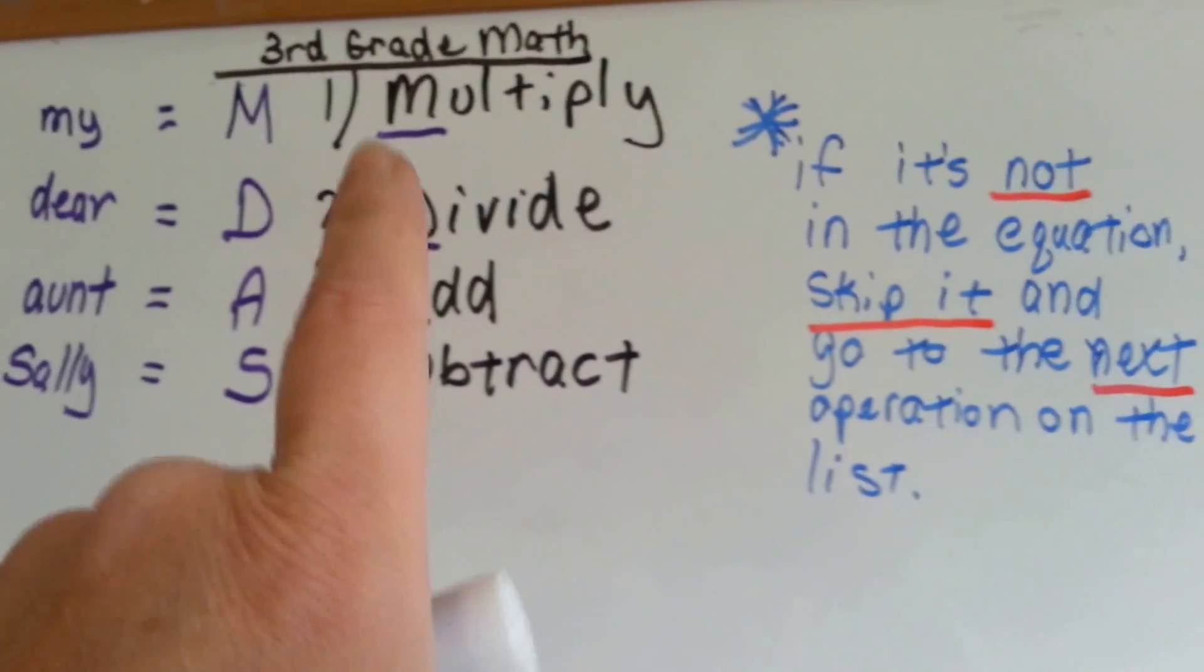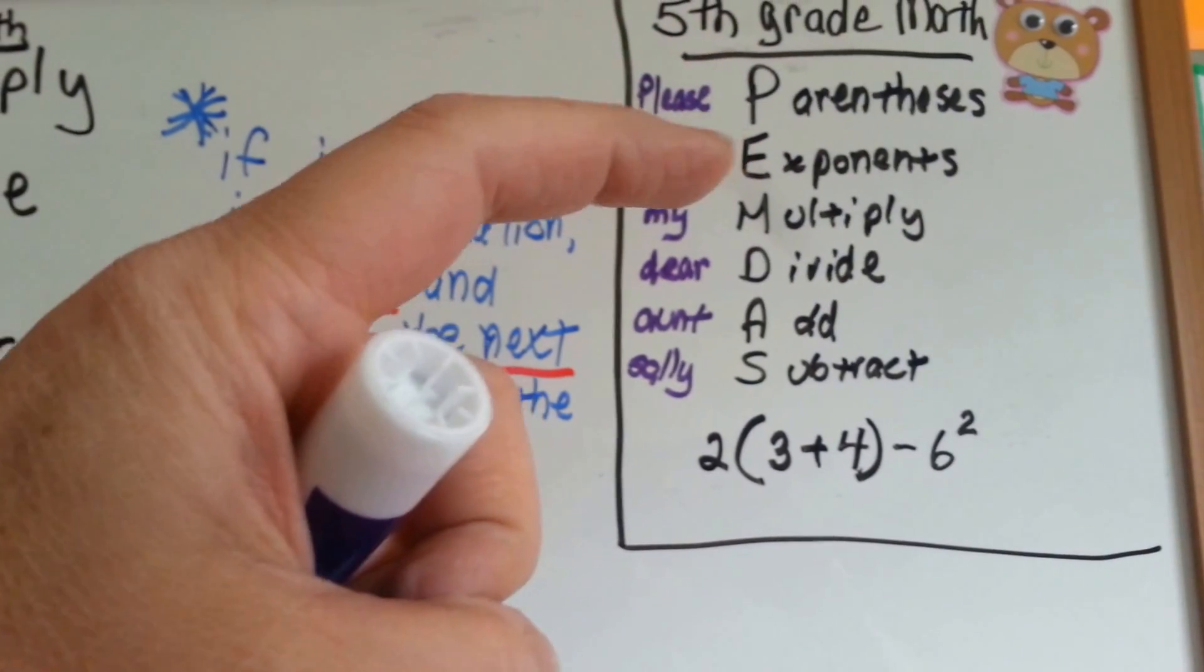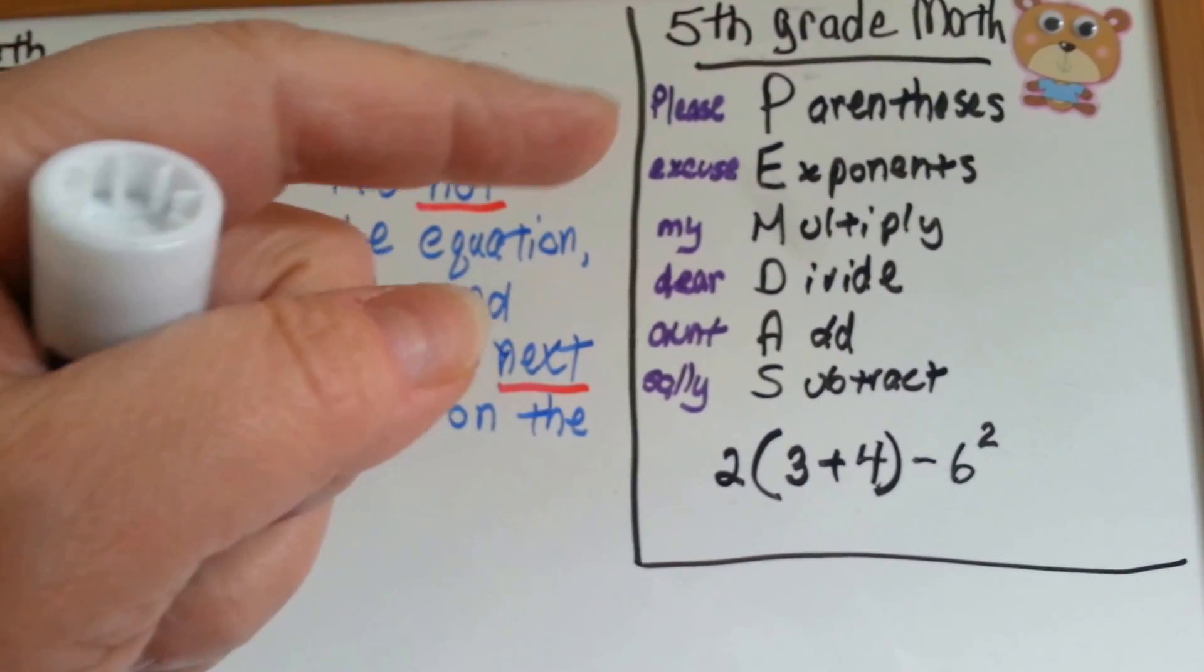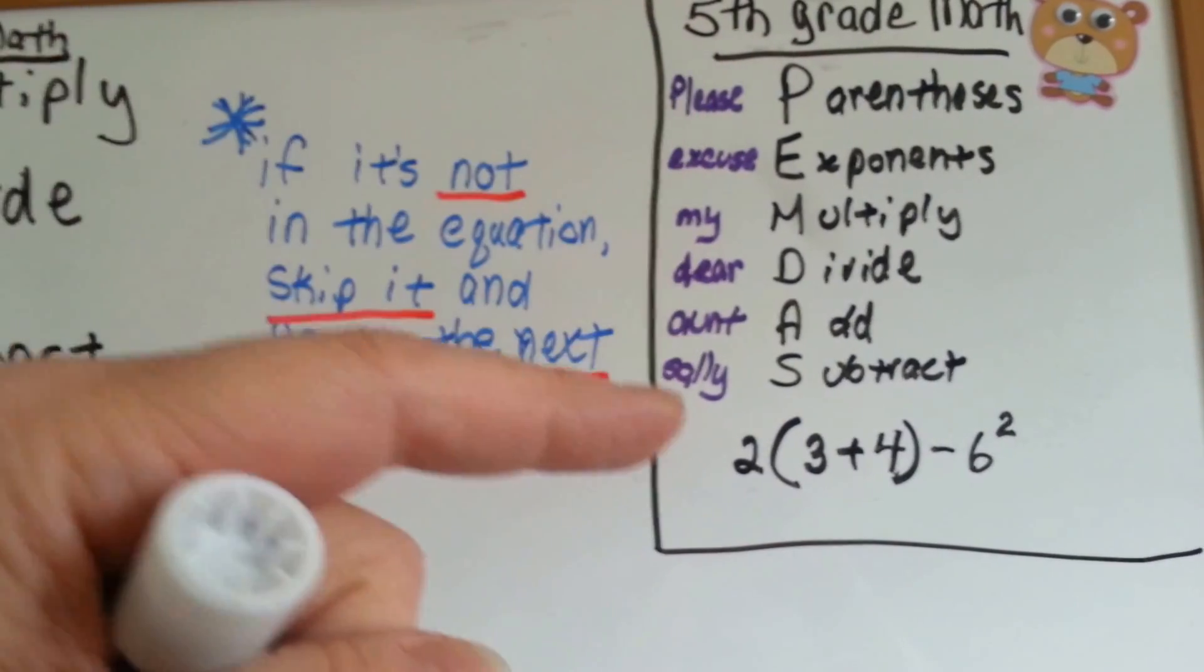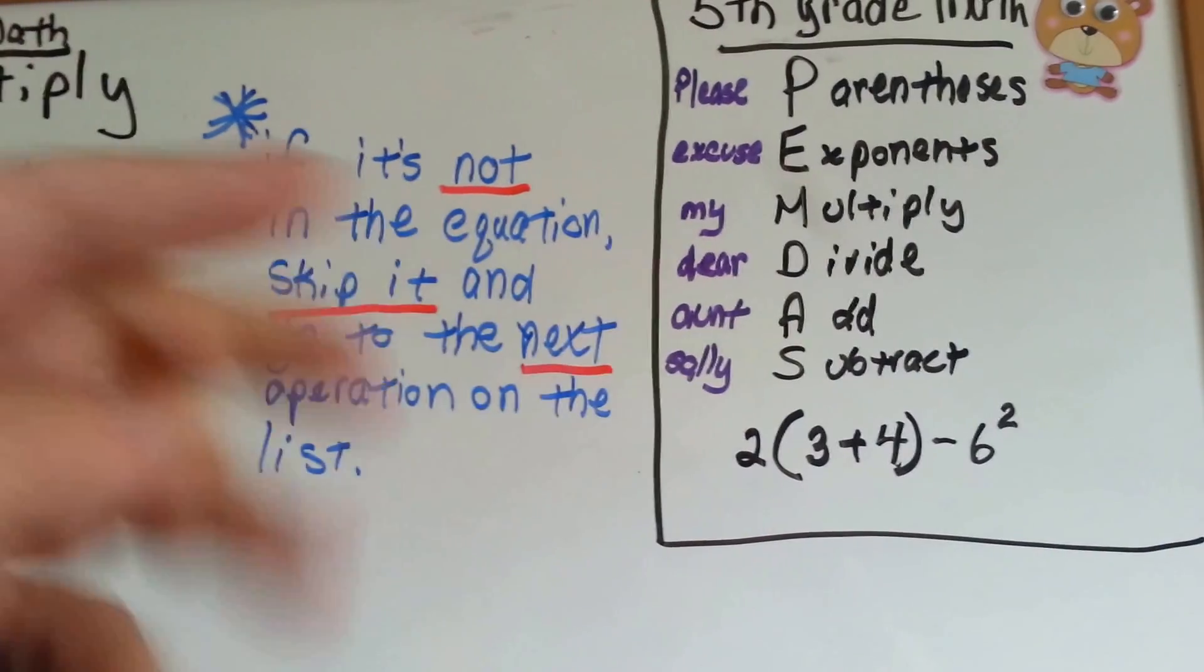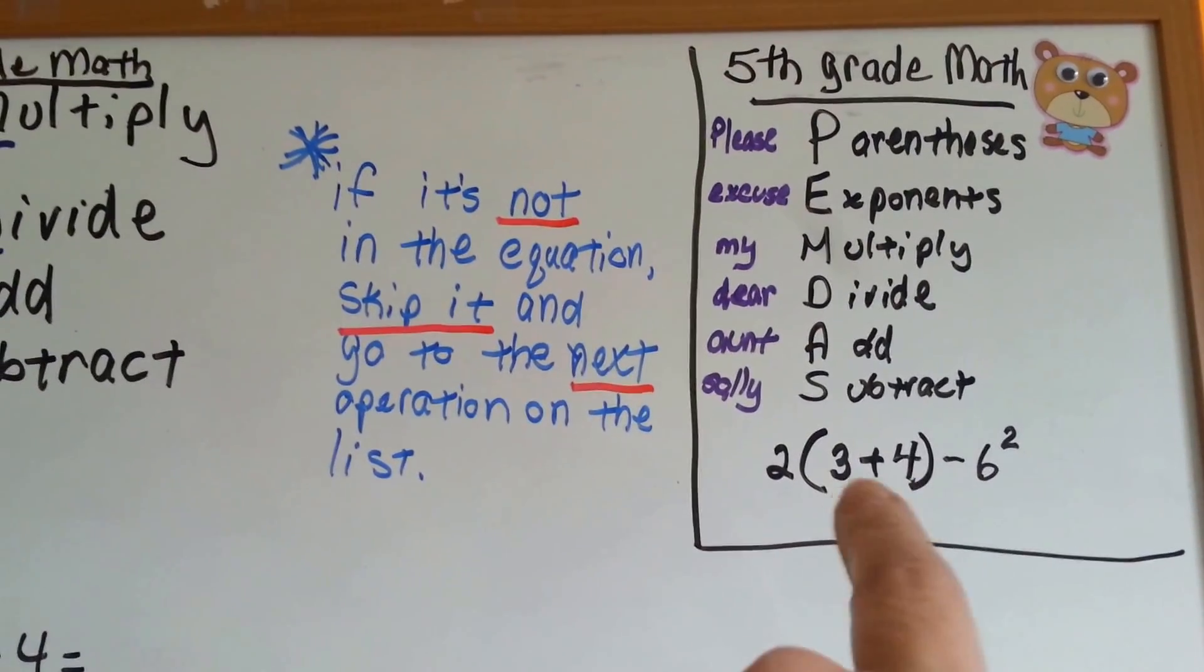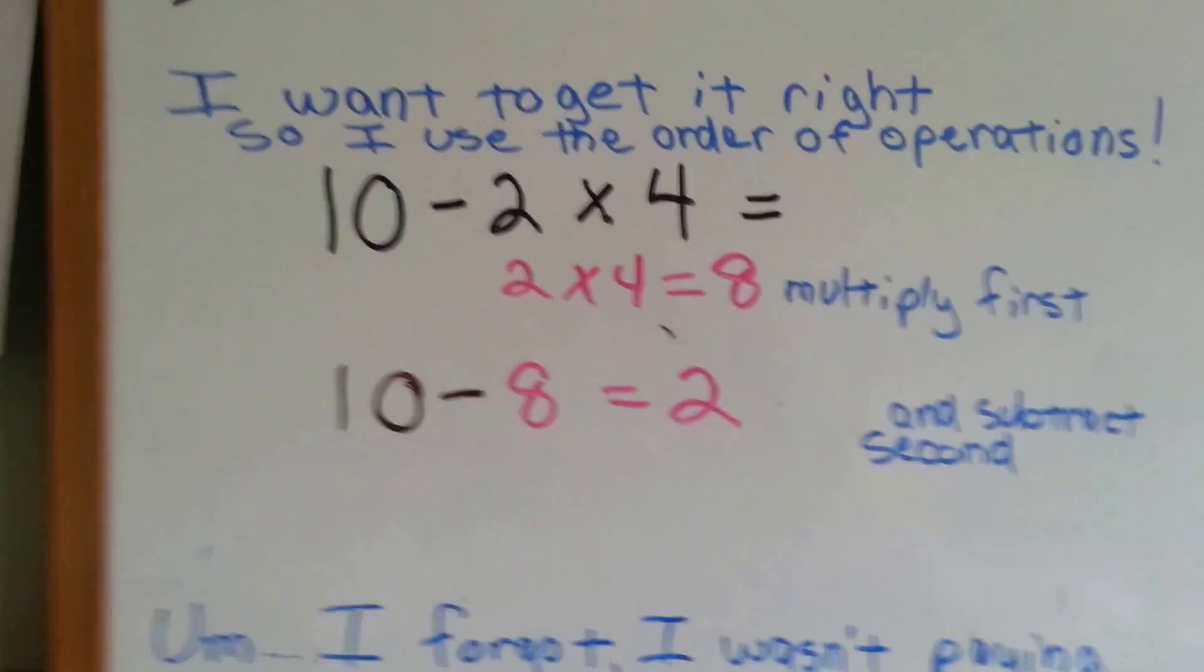The reason I'm saying this is 3rd grade math is because when you get to 5th grade math, we're going to add a P and an E above it, so it's PEMDAS instead of just MDAS. And the way 5th graders and older remember this is, please excuse my dear Aunt Sally. Now, you can come up with anything you want to remember this. You could say, please excuse mom, dad, and sister. It's up to you.